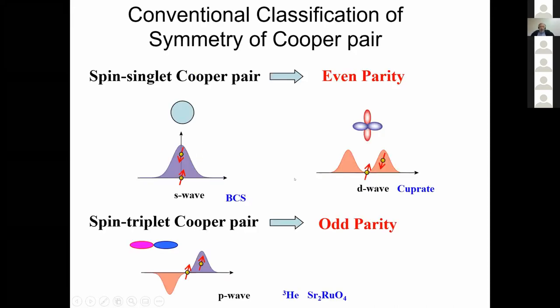This issue of odd-frequency pairing and symmetry of Cooper pairs is very well known in this audience. In the standard classification of symmetry, the sum of orbital spin momentum should be even. We distinguish spin singlet situations when we have either S-wave or D-wave, or if we speak about spin-triplet pairs, then in the conventional case we speak about P-wave and higher orders.